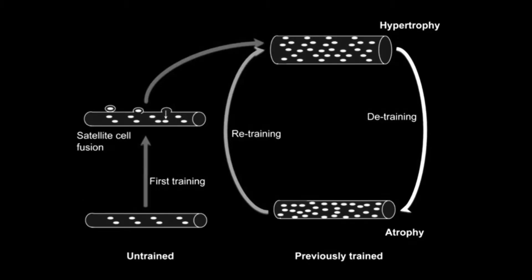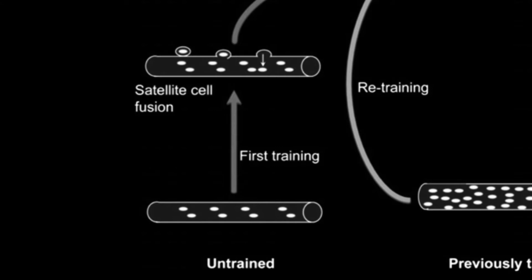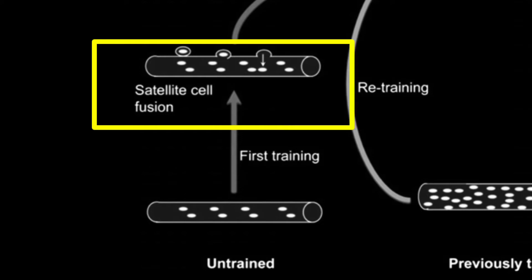Looking at the model, we can learn two parts. In the first part, you start training with a baseline of myonuclei in your muscles. Training creates an overload, which activates satellite cells — cells that exist alongside muscle fibers. These satellite cells then undergo mitosis, which means they multiply and divide.